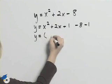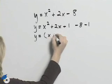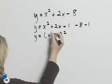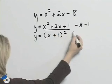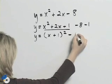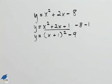I can now complete the square and write x plus 1 squared for this portion. Then minus 8 minus 1 is minus 9. So the standard form of the equation is y equals x plus 1 squared minus 9.